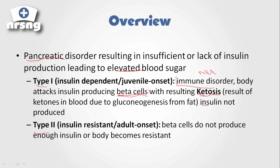Type 2, on the other hand, is insulin resistant. In this case, the beta cells do not produce enough insulin, or the body becomes resistant to it. This is known as type 2 insulin-resistant adult-onset diabetes. So to keep the two separate: type 1 — the body does not have the ability to produce insulin; type 2 — it doesn't produce enough, or the body starts to become resistant to the insulin that is circulating.